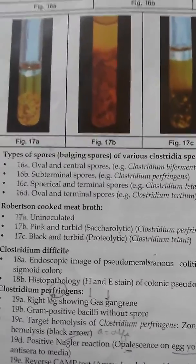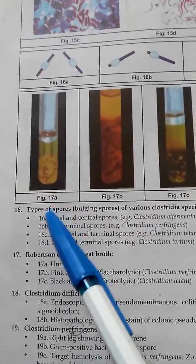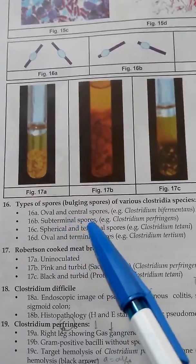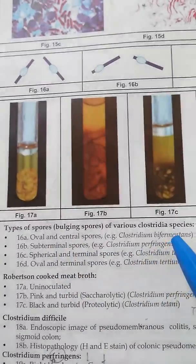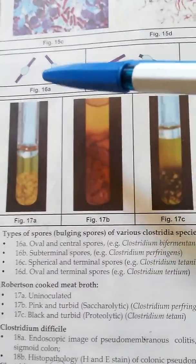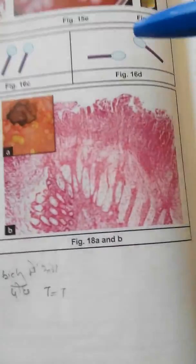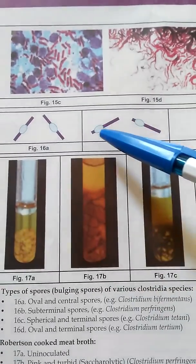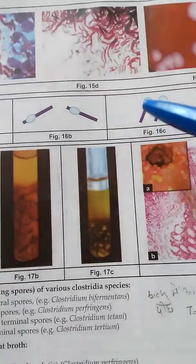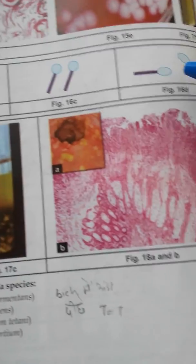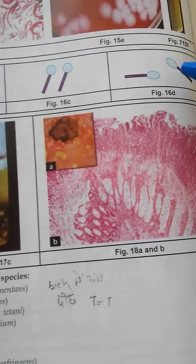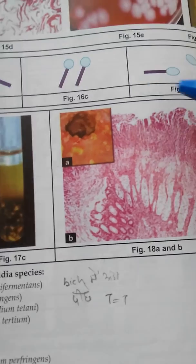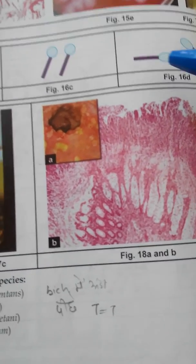Today we will discuss the remaining part, beginning with the types of spores seen in Clostridium species. This is 16a, 16b, 16c, and 16d. You can see the position of spores: 16a is central, 16b is subterminal, 16c is terminal and rounded, and 16d is terminal and somewhat fusiform in shape.